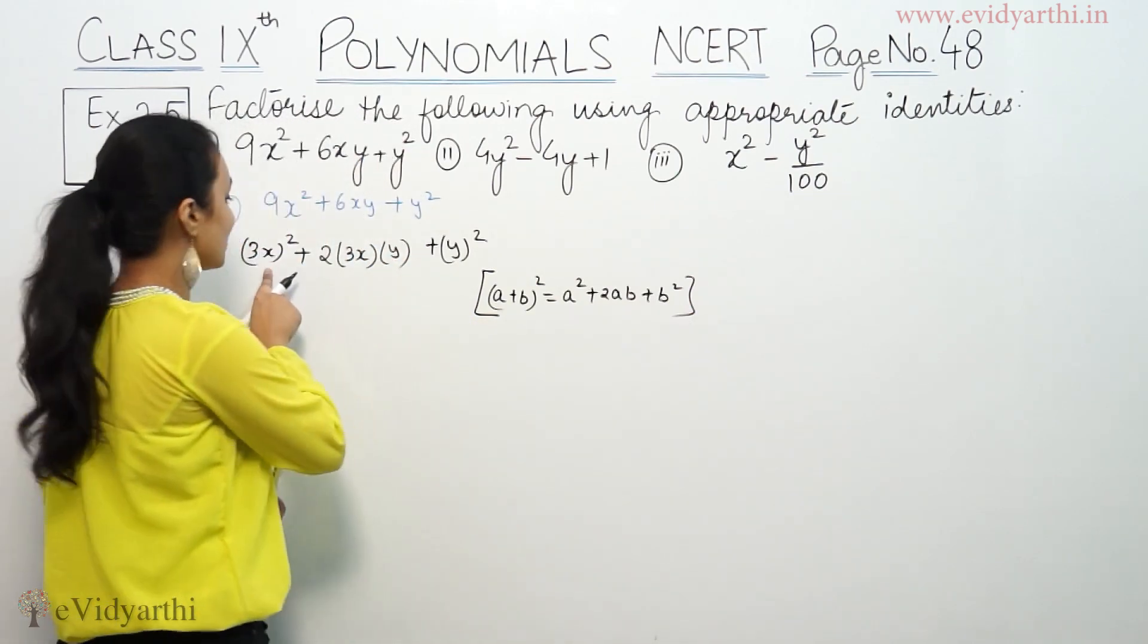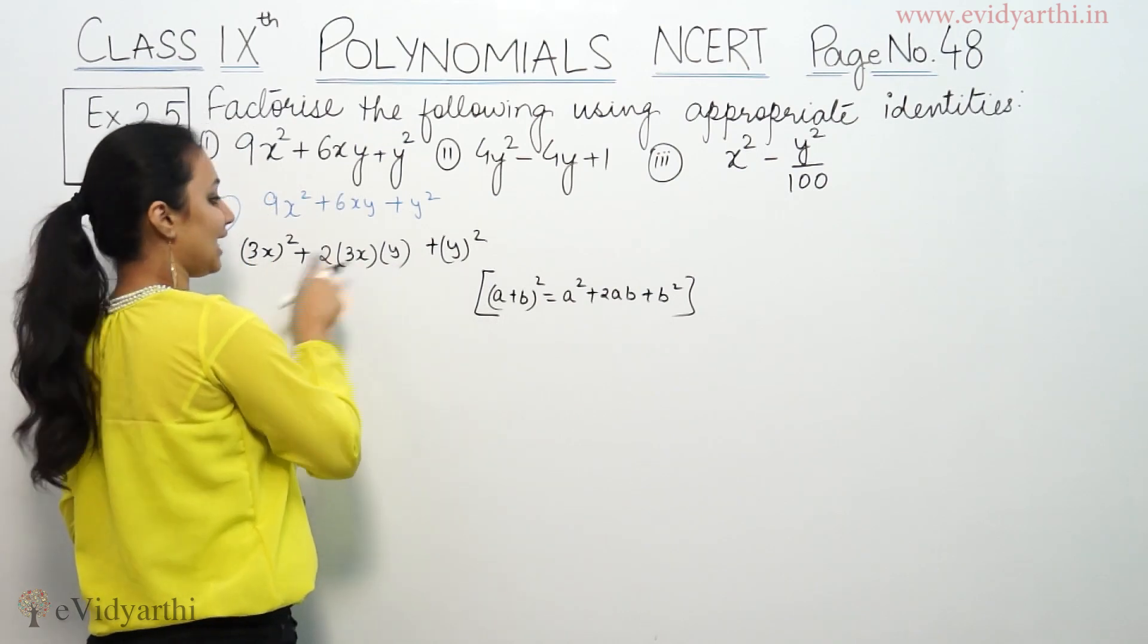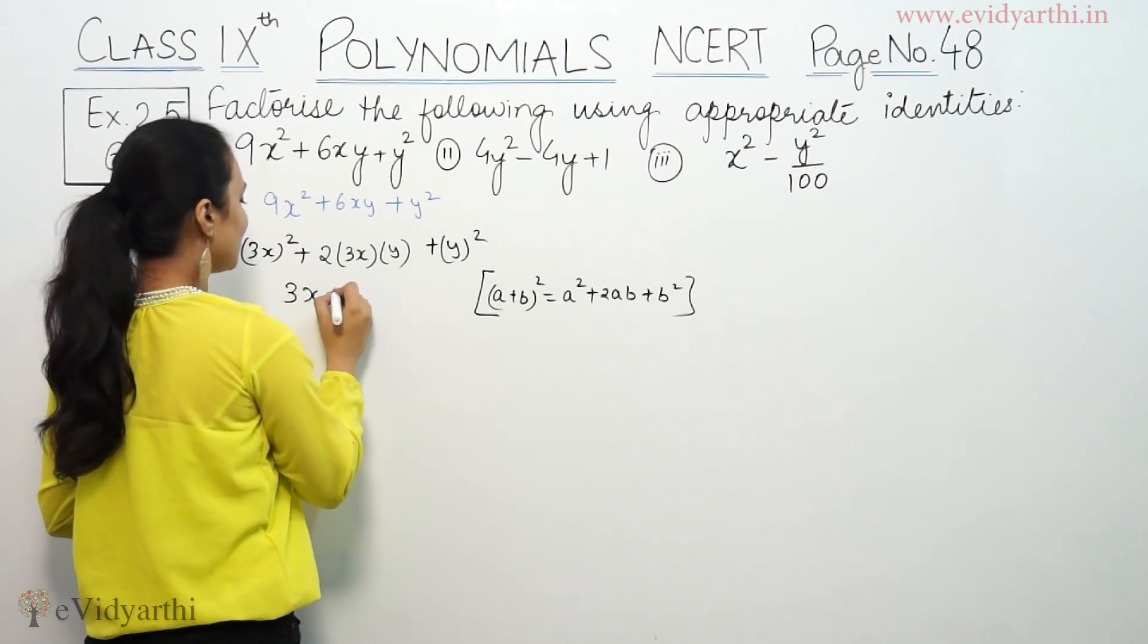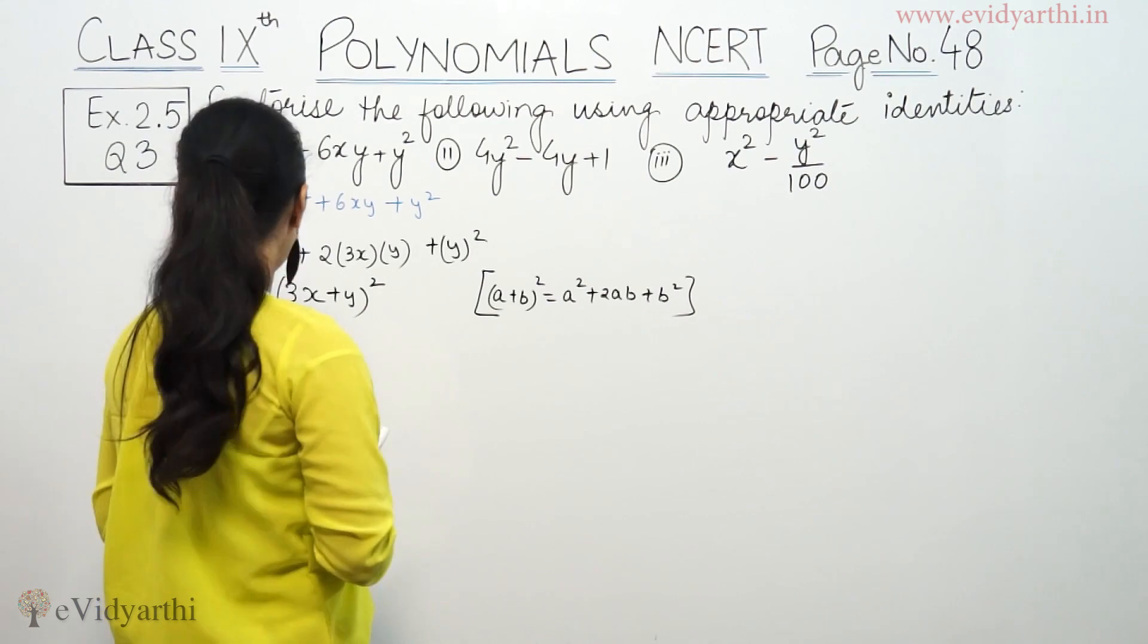So, this is a² plus b². 2 into a into b. So, if we multiply a plus b, full square. That means, a is 3x, b is y, a plus b, full square.